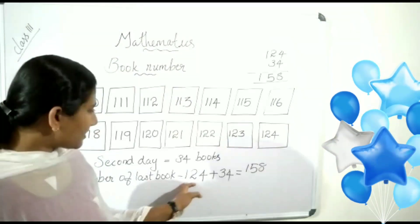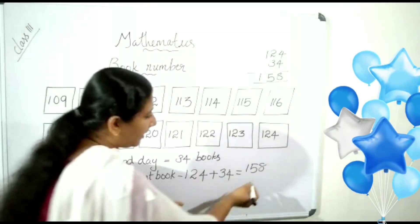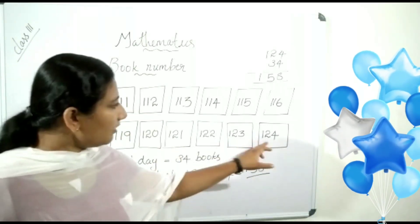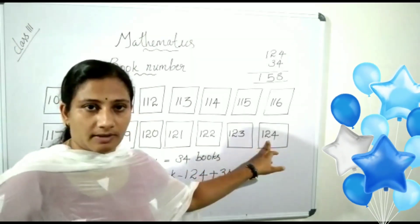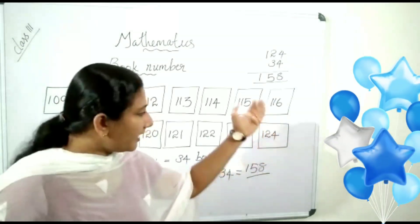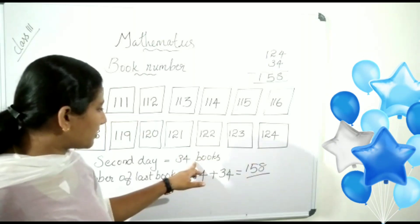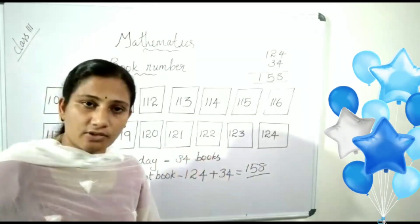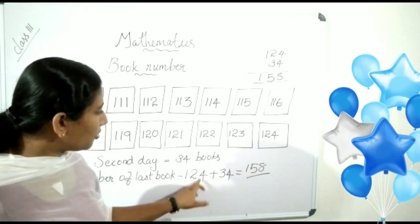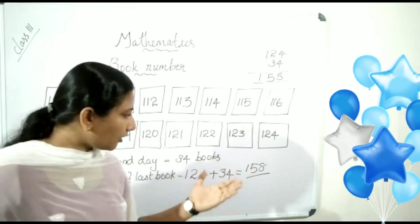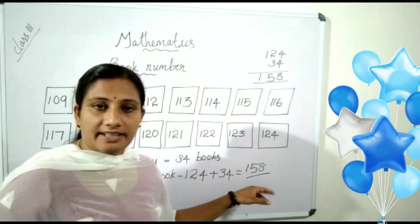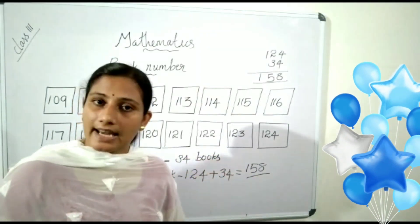What is the last number of books? 158. First day, the last book number was 124. Next day, 34 more books were arranged. So, let us add 124 plus 34. Then, we will get the answer 158. That is the number of the last book.